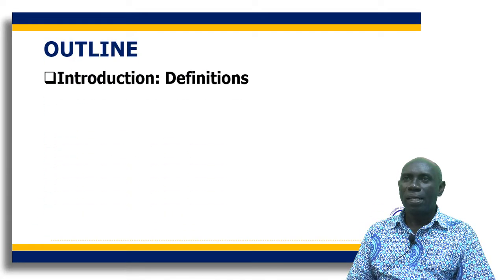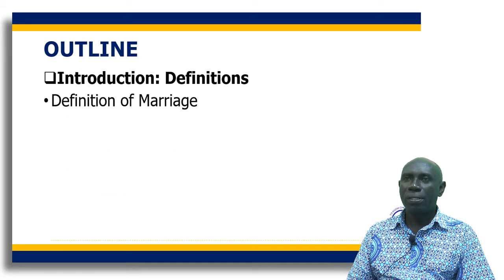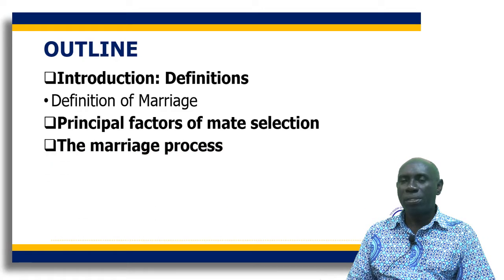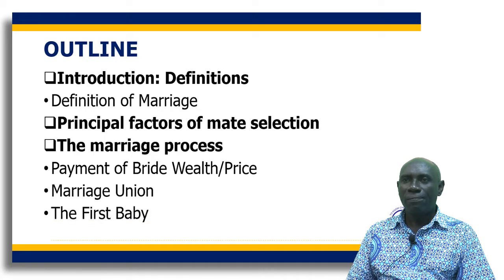For the outline, first we consider introduction and that will involve some definitions — a definition of marriage. Then we look at some principal factors of mate selection, then the marriage process — the processes one goes through to get married. That will include the payment of the bride wealth, the marriage union, and the first baby, which will be the climax of the marriage process.